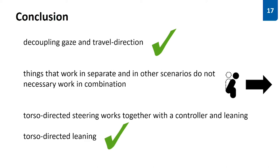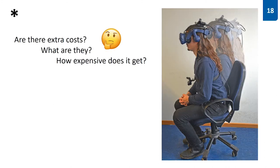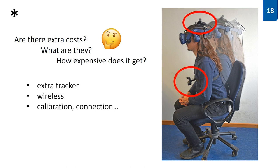But wait, there was something else. The costs. We wanted to talk about the costs. Are there extra costs? What are they? And how expensive does it get? First, we need an extra tracker. More gear is never good. Second, the system should be wireless to allow unrestricted turning. Last and often forgot is additional calibration, more possible connection problems and so on. So, it is, I would say, as cheap as never before, but it still has its price.